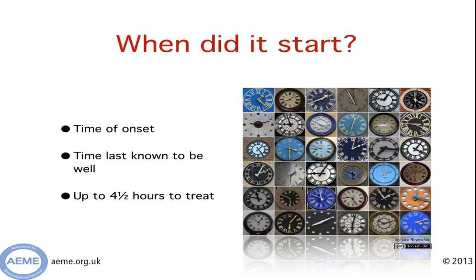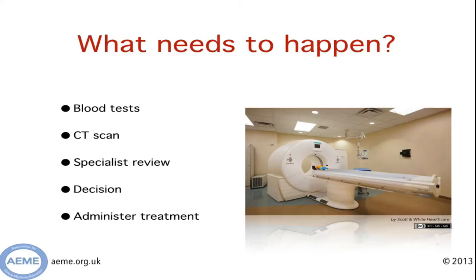These are the things that need to happen before somebody gets thrombolysis treatment: blood tests need to be done and a CT scan needs to be performed. The blood test results and CT images need to be reviewed by a specialist qualified to make decisions regarding thrombolysis. And then finally the treatment has to be given — so there are quite a few steps that have to happen within a relatively short space of time.